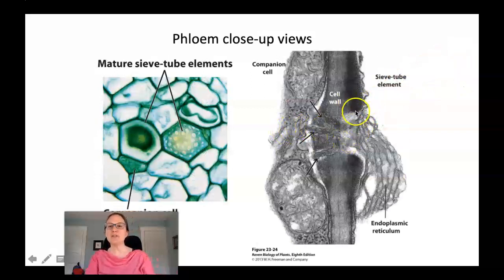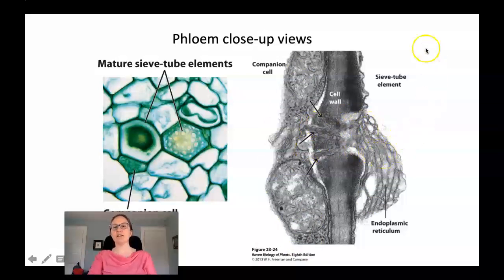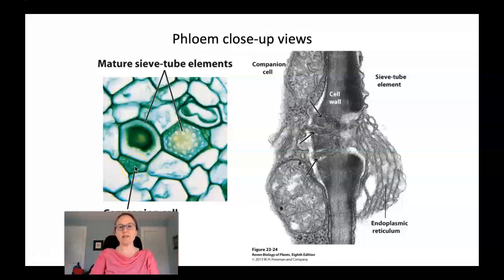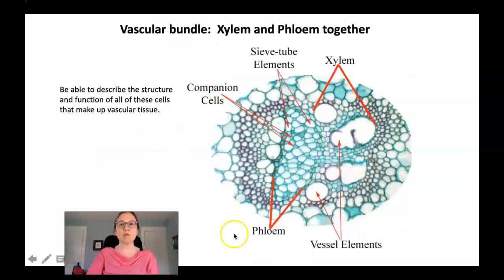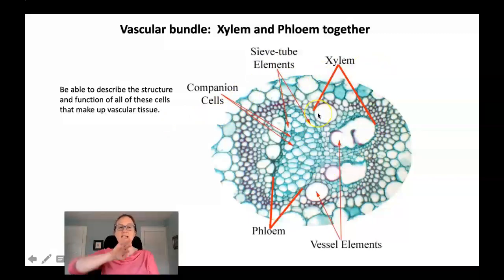Here are some close-up views of phloem. The companion cell has active Golgi and plastids directing the sieve tube element. The endoplasmic reticulum actually moves through the two cell walls, and the sieve tube element is largely empty. Sieve tube elements and companion cells are always associated in pairs. Overall, in one vascular bundle you have all the different cell types discussed. In general, xylem is located toward the inside of the plant and phloem is toward the outside within a stem.